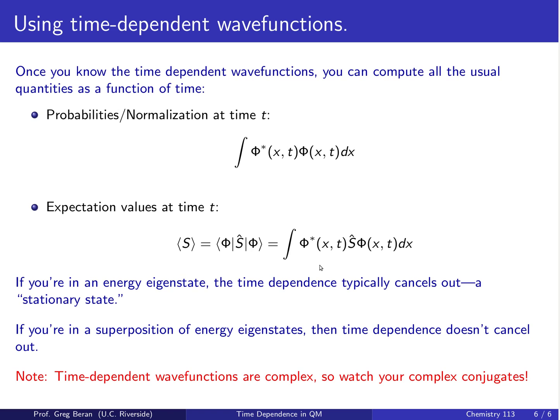Now notice that if you're in an energy eigenstate, it often works out that these various properties you might calculate end up having the time dependence cancel out. The t disappears when you take the expectation values because you have the ψ* ψ, and so you have the complex conjugate times itself, and that often cancels the time dependent phase factor.